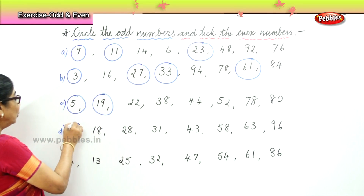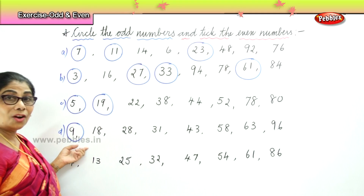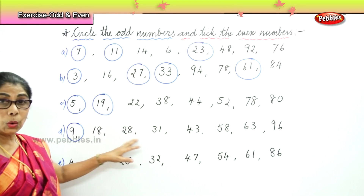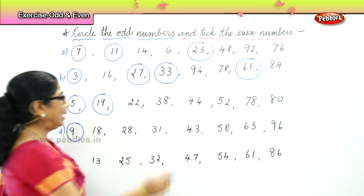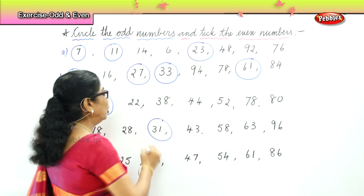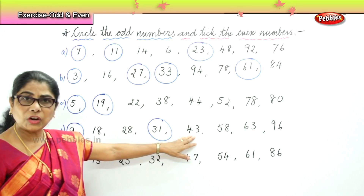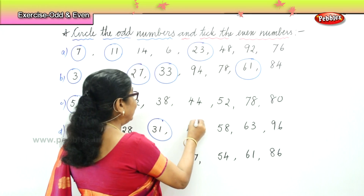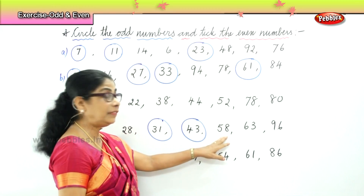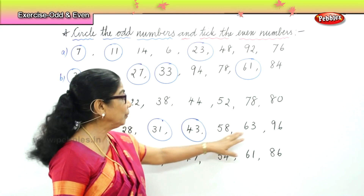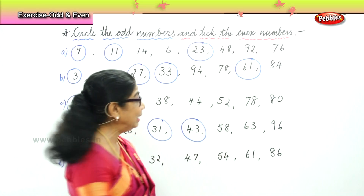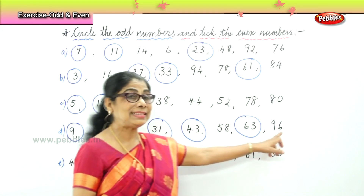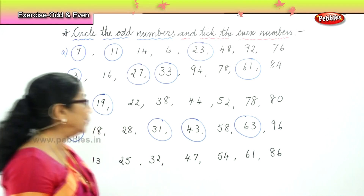Set D: Nine — very good, odd number. Eighteen — no. Twenty-eight — no. Thirty-one ends in one — yes, very good, odd number. Forty-three ends in three — very good, odd number. Fifty-eight — no. Sixty-three ends in three — very good, it's an odd number. Ninety-six ends in six — it is not an odd number.